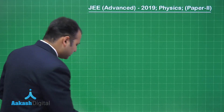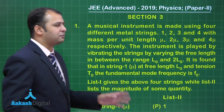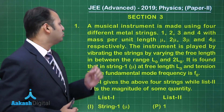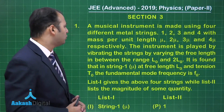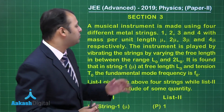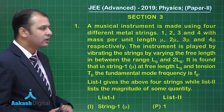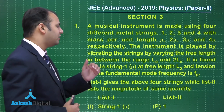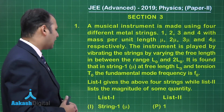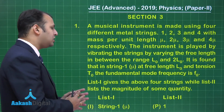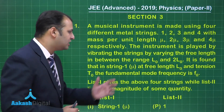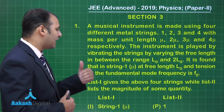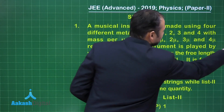Now let's start with the third section of this paper with the very first question, which belongs to chapter Waves. A musical instrument is made using four different metal strings 1, 2, 3, and 4 with mass per unit length as mu, 2mu, 3mu, and 4mu respectively. The instrument is played by vibrating the strings, varying the free length in the range of L0 and 2L0. In string 1, at free length L0, the tension is T0 and the fundamental frequency is F0. List 1 gives the four strings while List 2 lists the magnitude of some quantity.